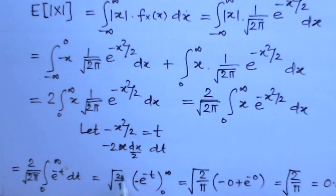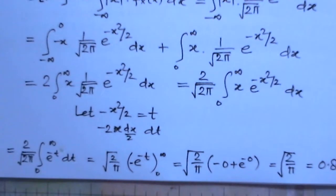So this comes to root 2 over pi, e to the power. If you integrate it, you will get minus e to the power minus t. Root 2 over pi minus e to the power 0. So root 2 over pi, that comes to 0.8.